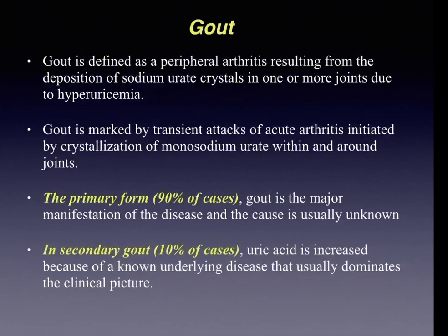Gout is defined as a peripheral arthritis resulting from deposition of sodium urate crystals in one or more joints due to hyperuricemia. It is characterized by transient attacks of acute arthritis initiated by crystallization of monosodium urate crystals within and around the joints. Primary gout occurs in about 90 percent of cases where gout is the major manifestation with unknown etiology, while secondary gout occurs in about 10 percent where uric acid is elevated due to a known underlying disease.